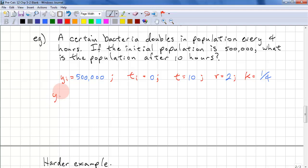So we have y of t equal to yi times r to the power of kt. This equals 500,000 times 2 to the power of 10 over 4, and this is roughly 2.83 million. And that's the number of bacteria.